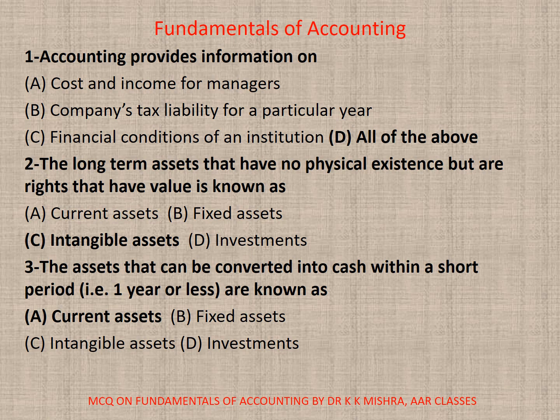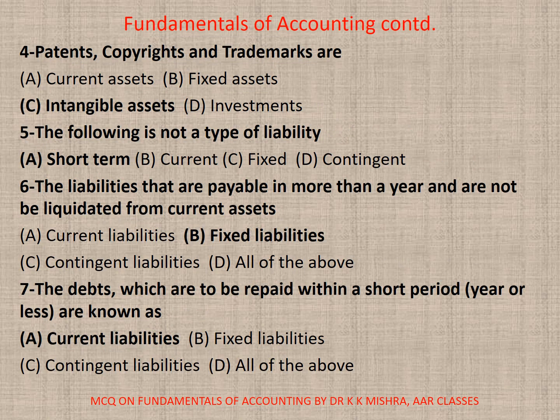Question 3: The assets that can be converted into cash within a short period, that is 1 year or less, are known as A. Current Assets, B. Fixed Assets, C. Intangible Assets, D. Investments. The correct option is A. Current Assets.